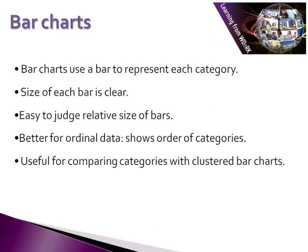Now, another way of representing data that is in the form of categories — so either nominal or ordinal data — is by using a bar chart. Bar charts actually use an individual bar to represent each particular category within a variable. The size of each bar is visually very clear to see, and that makes it very easy to judge the relative size of bars. So if you have a number of different categories within your variable and you use a bar chart, it makes it very easy to see that maybe there are more responses within one category than another.